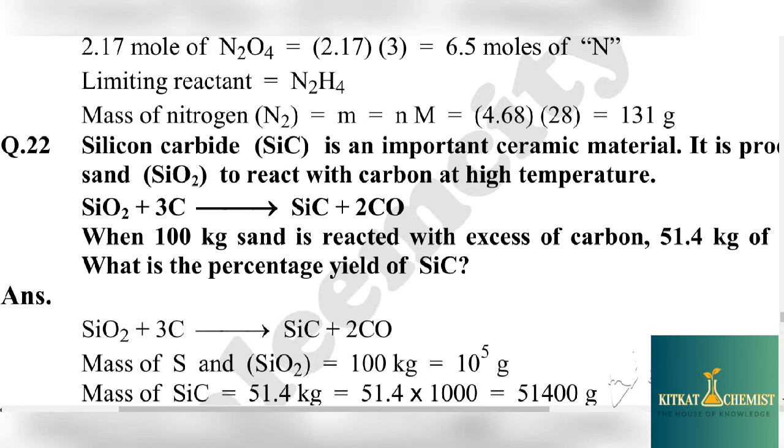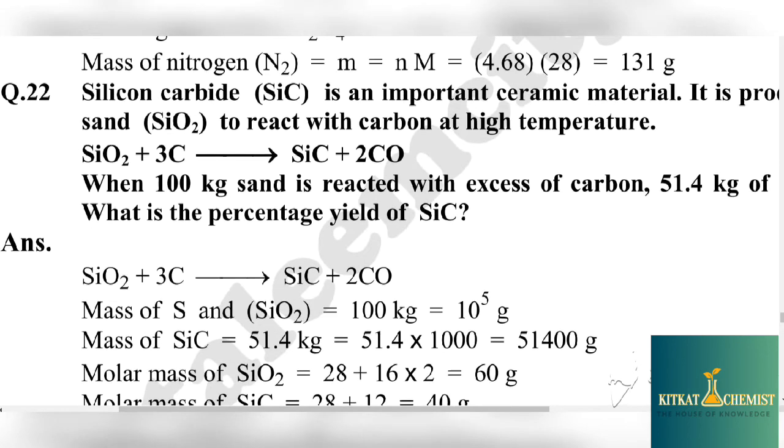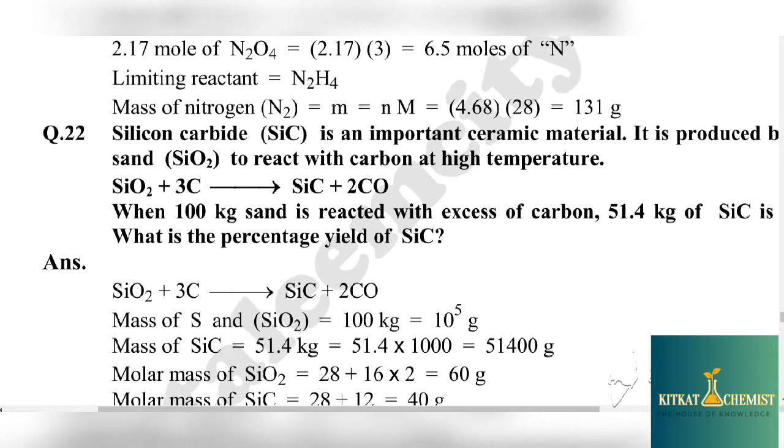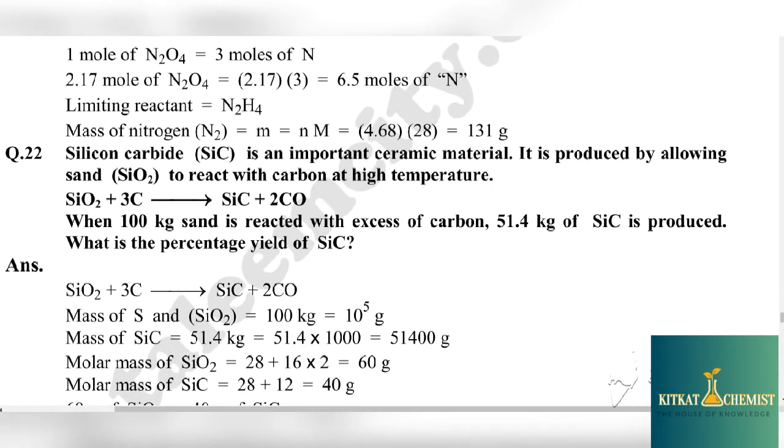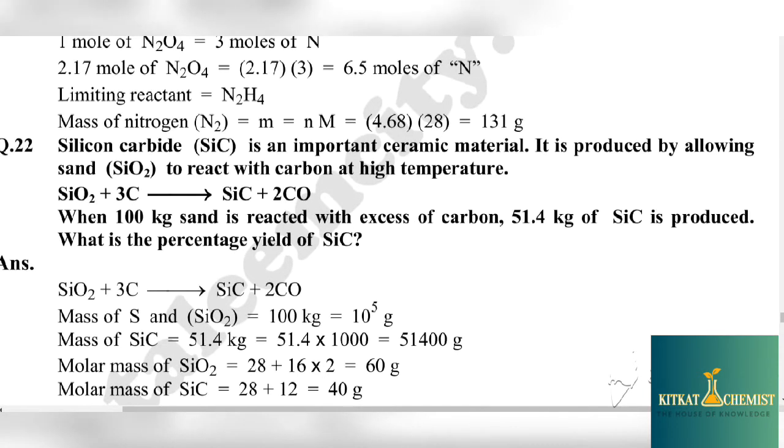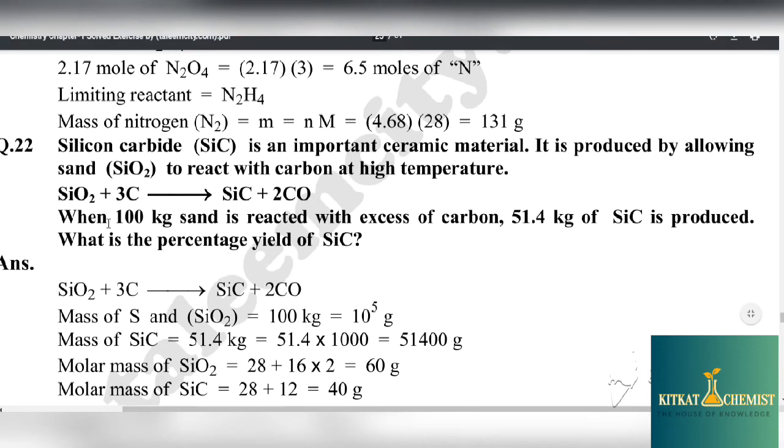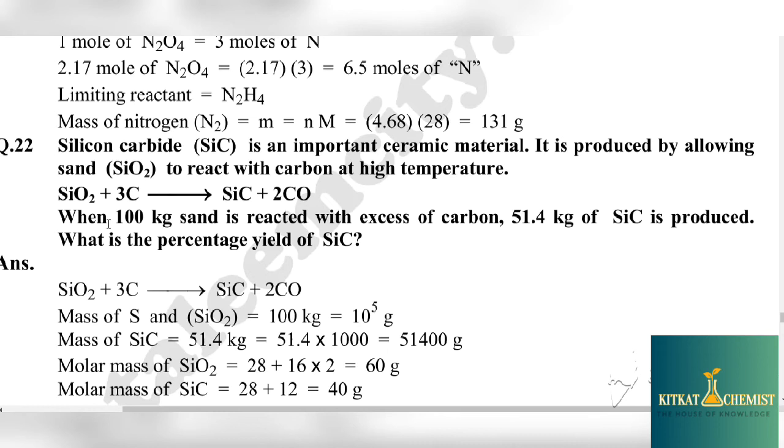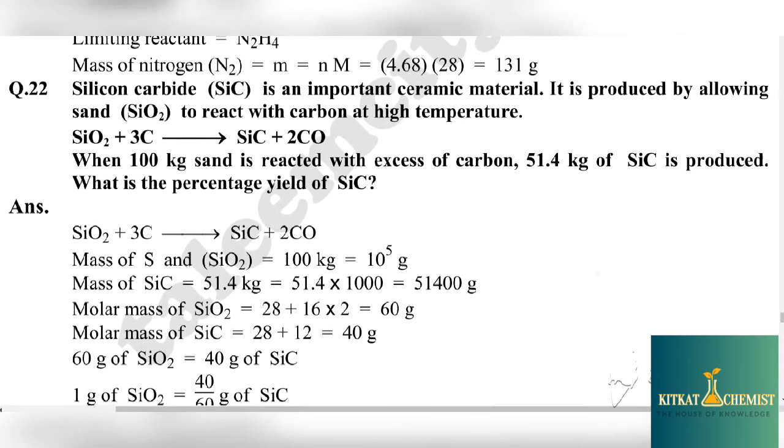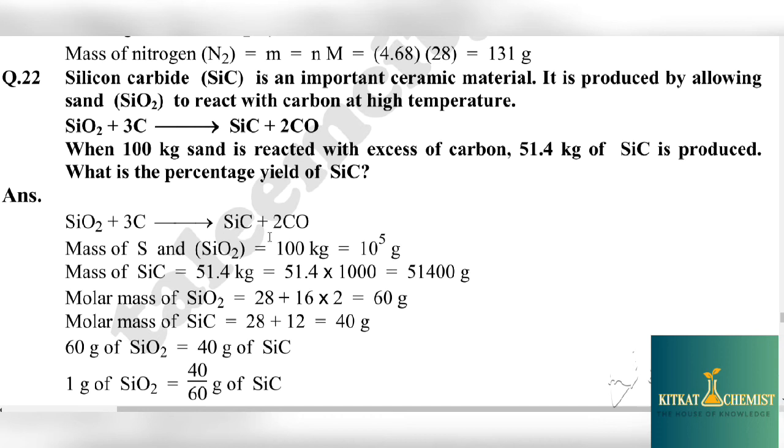Now move to the next question, that is question 22. Silicon carbide SiC is an important ceramic material. It is produced by allowing sand SiO2 to react with carbon at high temperature. SiO2 plus 3C produces SiC plus 2CO. When 100 kg sand is reacted with excess of carbon, 51.4 kg of SiC is produced. What is the percentage yield of silicon carbide? This is our last topic, percentage yield.